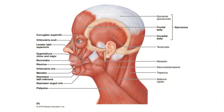The orbicularis oris muscle is also a sphincter type muscle that surrounds the mouth. When it contracts, it functions to close the lips — bringing the lips closer together — and it also serves to pucker the lips as well.